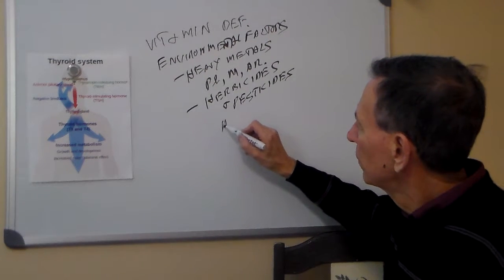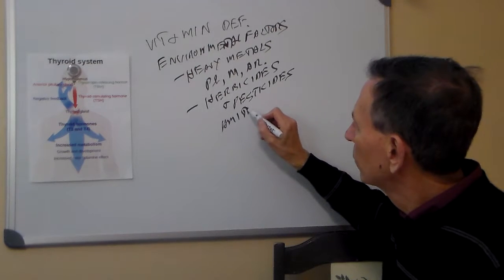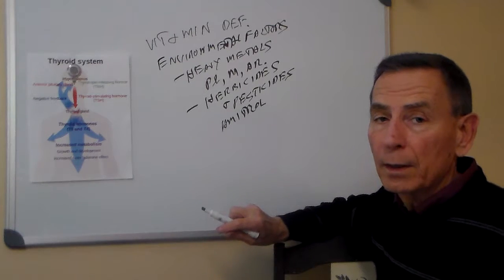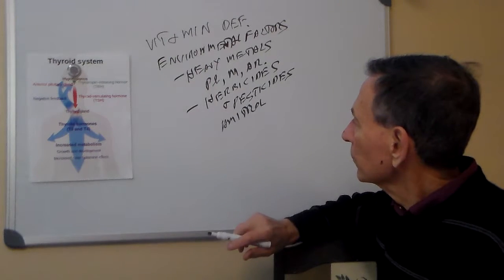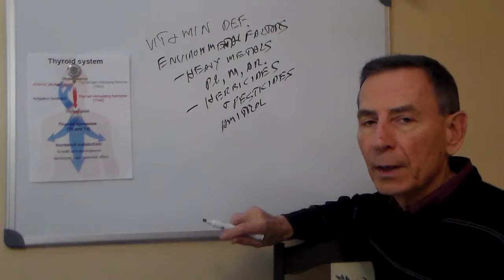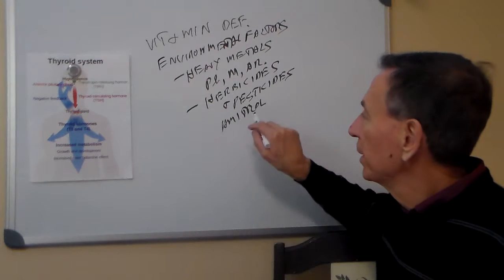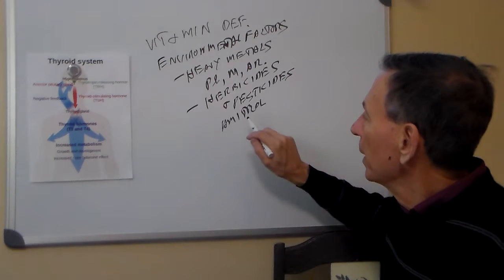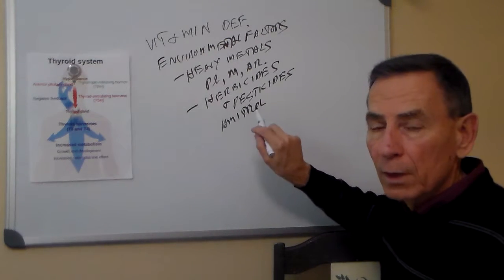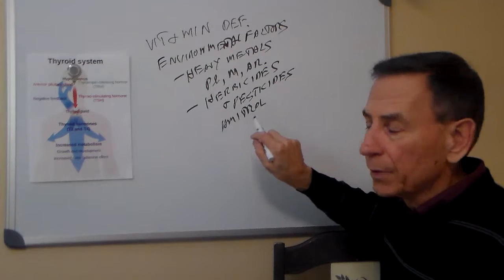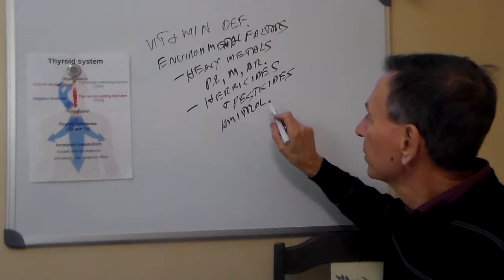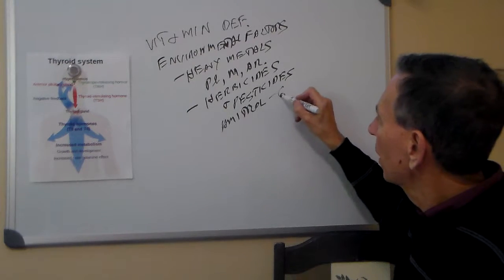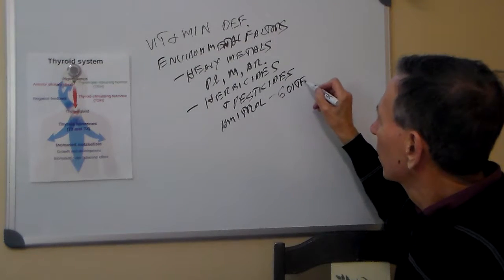Amitrole is an herbicide used to kill aquatic weeds. It's not supposed to be used on food crops but it does get into food crops because it's in the water. And I have found this on several clients testing results. And this definitely interferes with thyroid function.